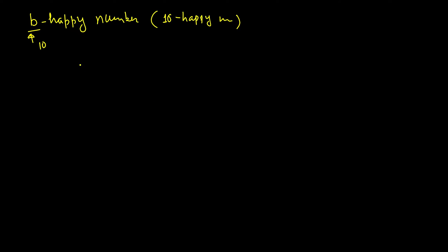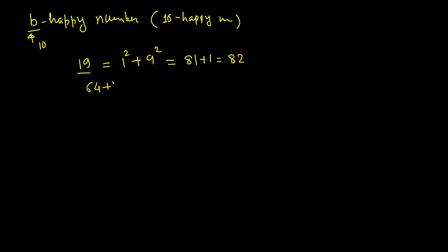Let's take an example with 19 in base 10. At each step, we replace the number with the sum of squares of its digits. So 19 becomes 81 plus 1, which is 82, then 64 plus 4 is 68, then 36 plus 64 is 100, and 1 plus 0 plus 0 becomes 1. Whenever you reach 1, we declare the original number to be a happy number.